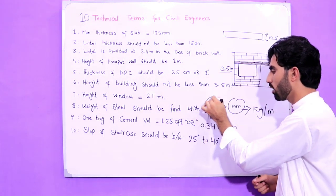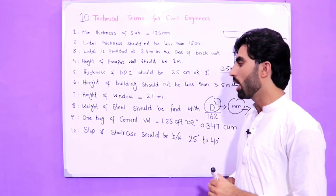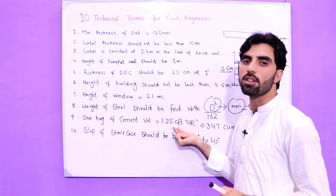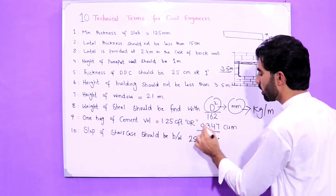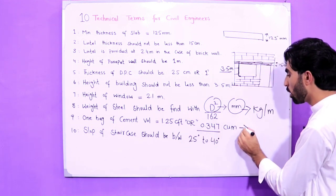The ninth one is guys, one bag of cement volume is 1.25 CFT or 0.0347 cubic meter, and the weight of cement should be 50 kg. The bag of one cement is 50 kg.